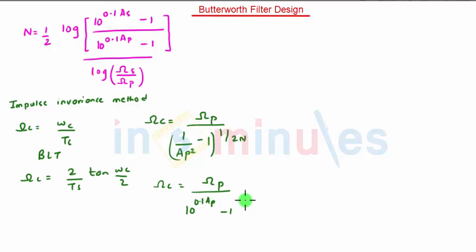So now after this we have to calculate the poles. For calculating the poles there is a simple general formula that is PK is equal to plus minus omega C e raised to J times N plus 2K plus 1 pi divided by 2 times N. Where K ranges from 0, 1, 2 that is N minus 1.